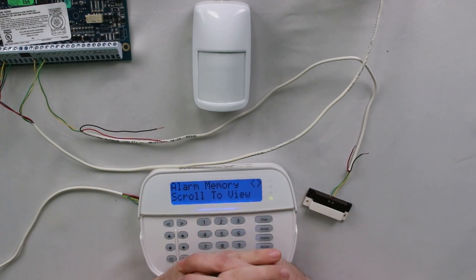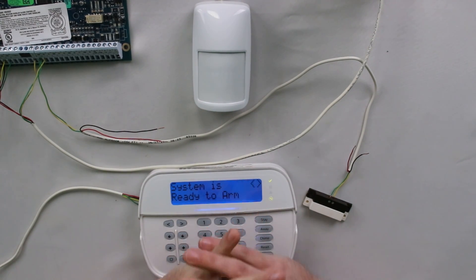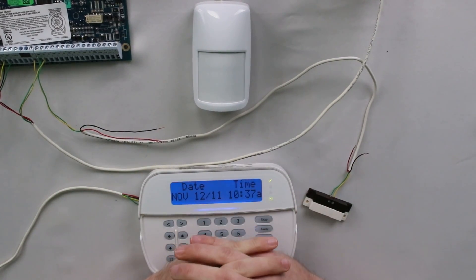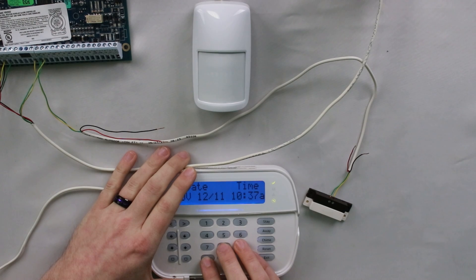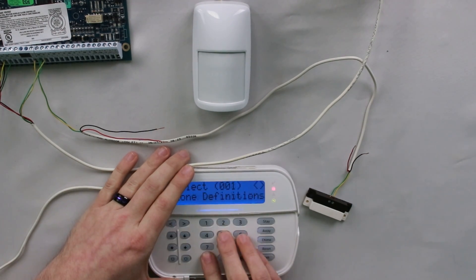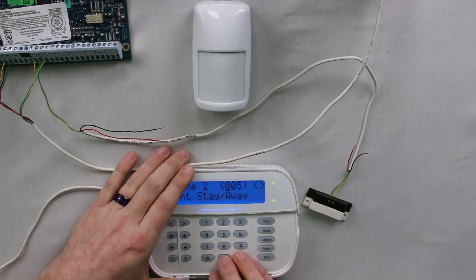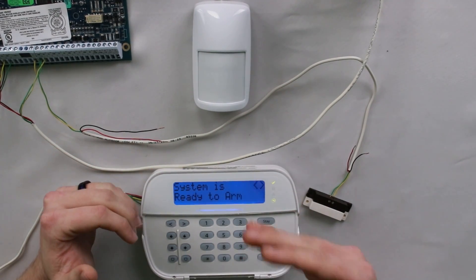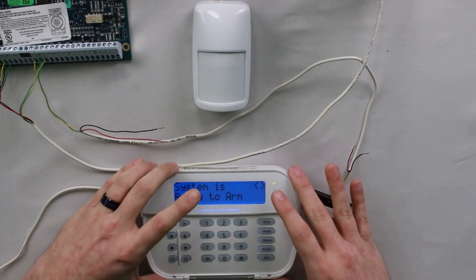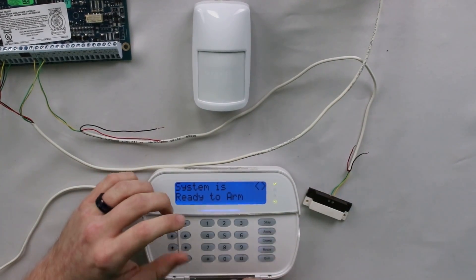So now what I'm going to do is I'm going to set up the system so that it is basically just a perimeter coverage system where you don't have motions or glass breaks or whatever that need to be bypassed while you're in stay mode. And basically, the system is always going to arm in away mode. But to do that, we have to take away our interior stay away definition. So I'm going to do that real quick. So essentially, all I've done is turned off the motion detector. Basically, there is no stay/away zone present on the panel.